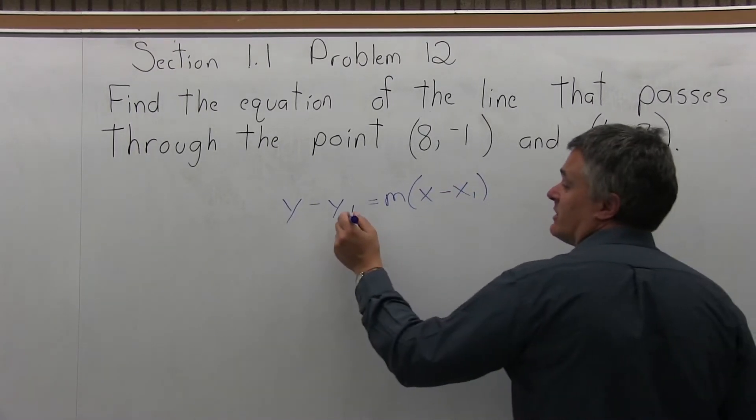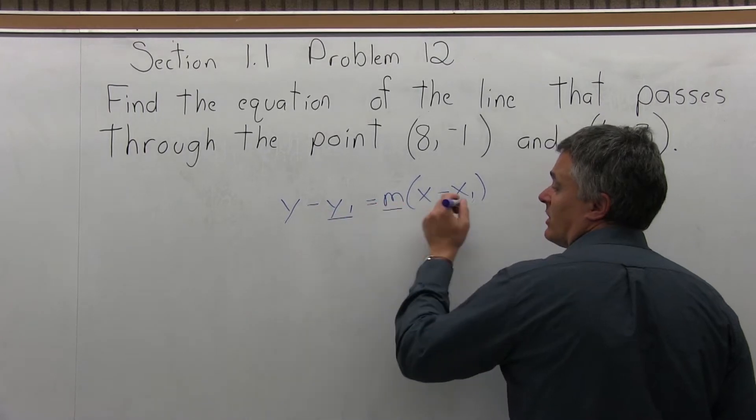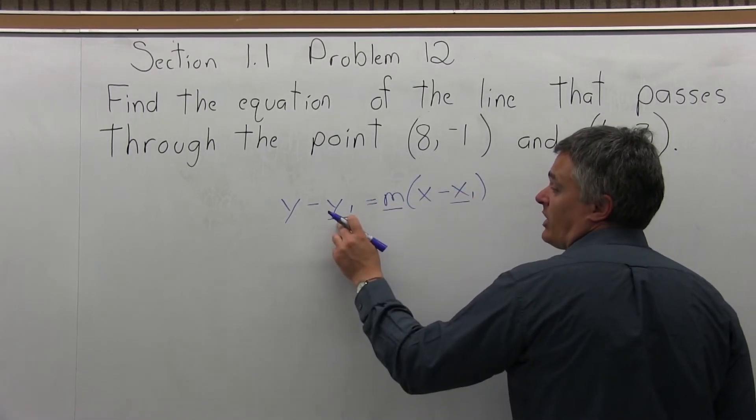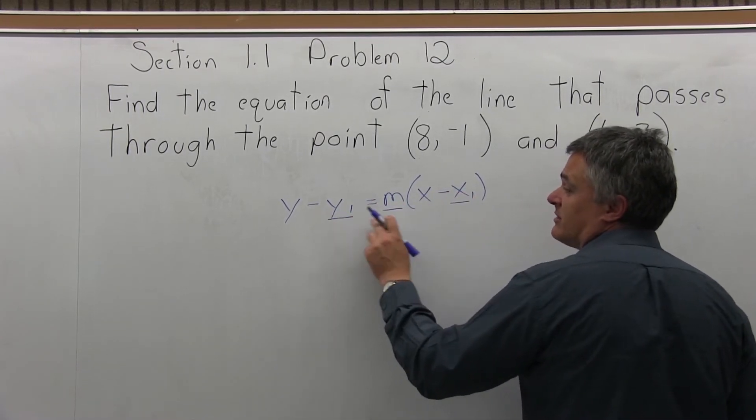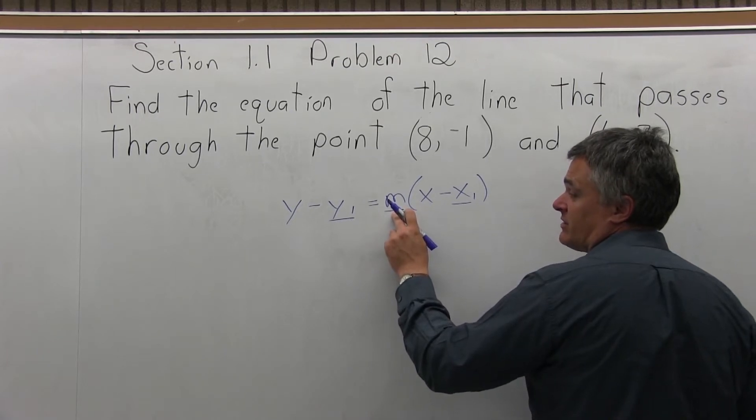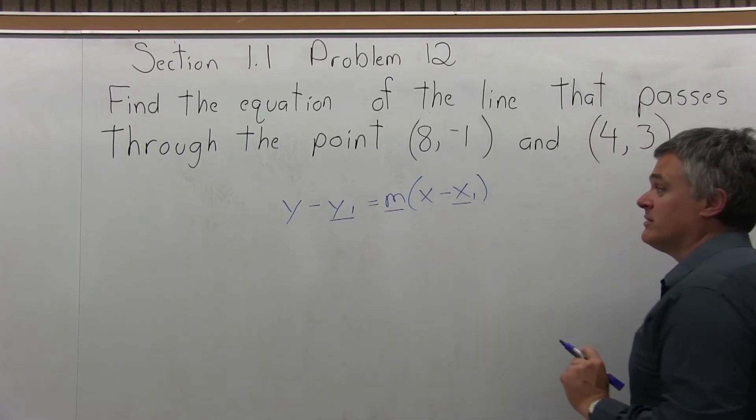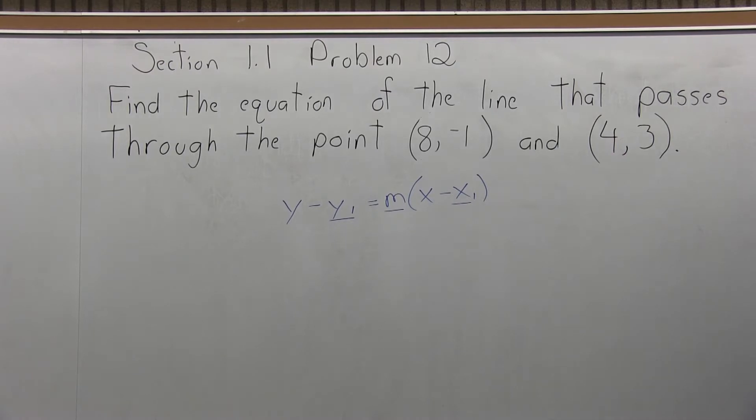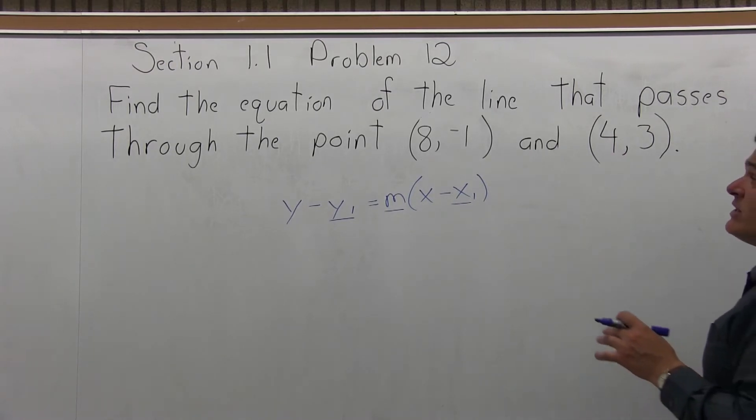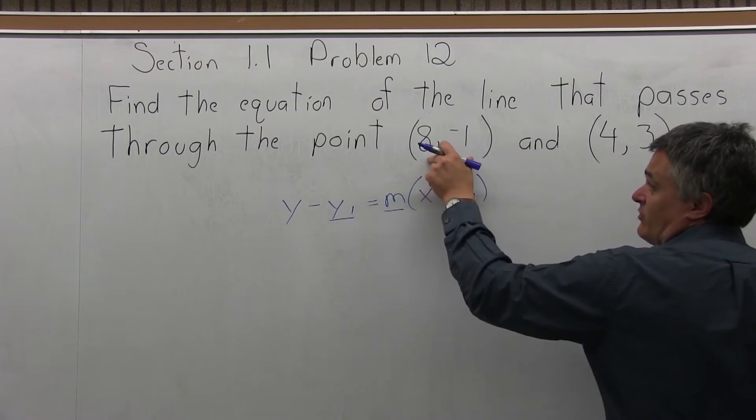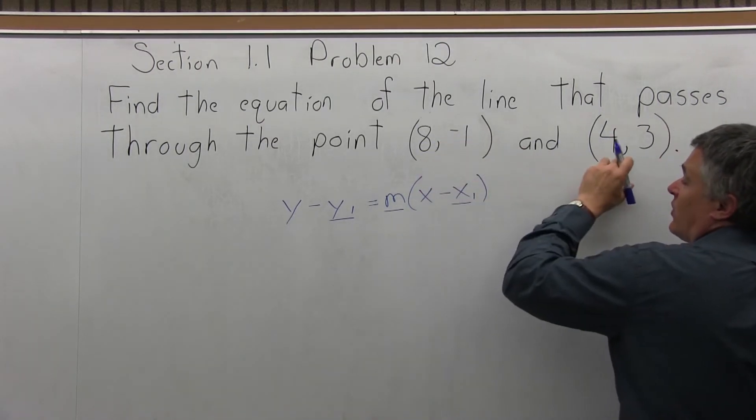There are three values that we have to fill in: the y1, the m for slope, and the x1, and the rest of the formula stays the way it is. Now we're given two points, (8, -1) and (4, 3).